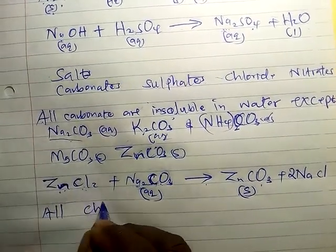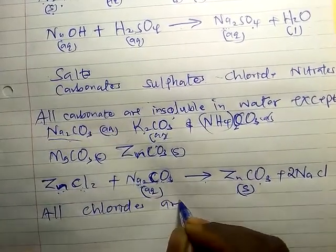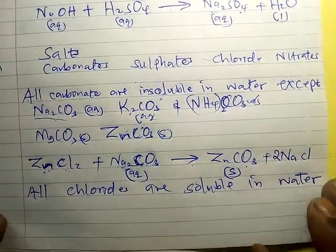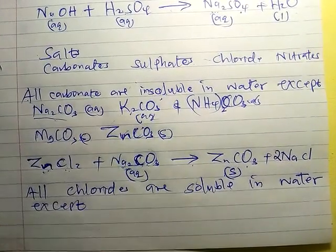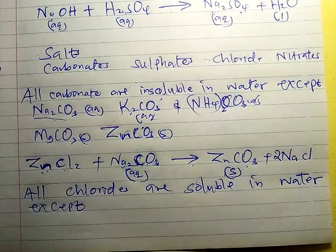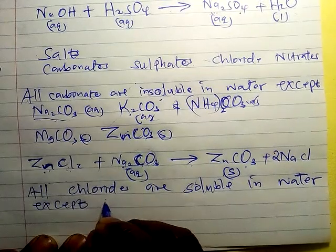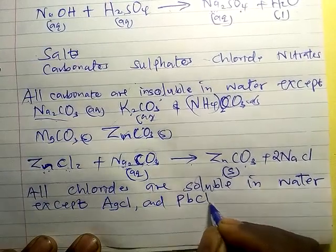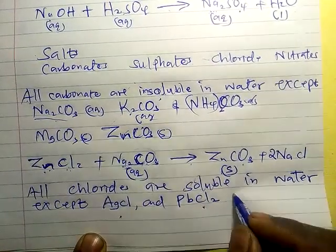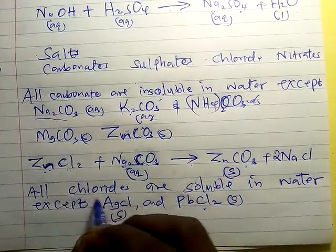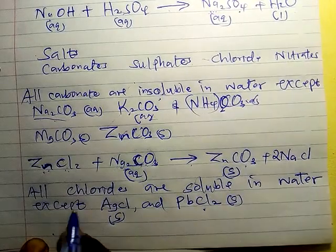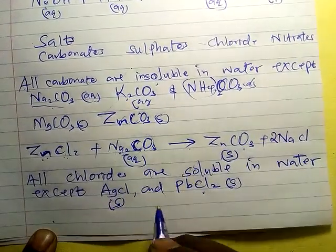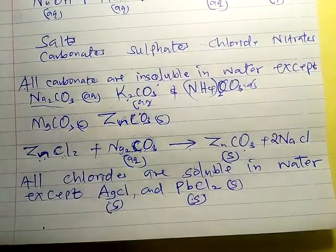All chlorides are soluble in water — they dissolve in water — except silver chloride and lead chloride. Silver chloride and lead chloride are white precipitates and they are solids (S). The rest — magnesium chloride, sodium chloride, aluminium chloride — all of them are aqueous. Whenever you see silver chloride or lead chloride in an equation, just put S.